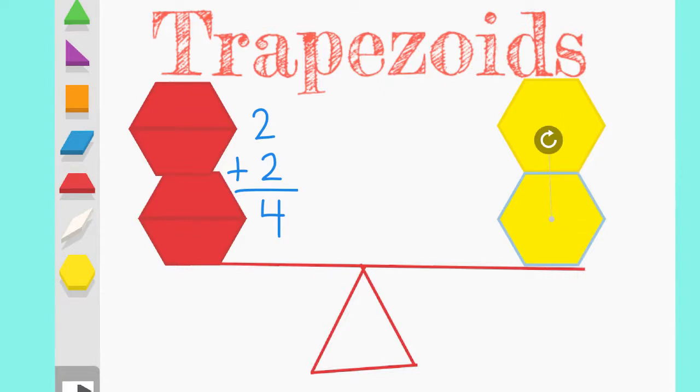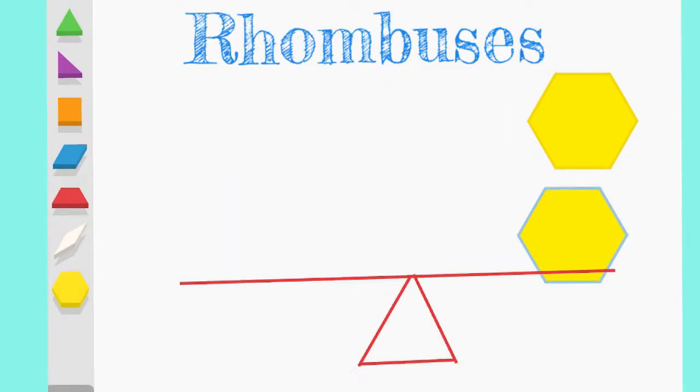Let's try it again with a different shape. Just like before, put two hexagons on one side of your scale and get a blue rhombus. Let's think. How many rhombuses will we need to balance with the two hexagons? Go ahead and pause the video to see if you can figure this out in your space.